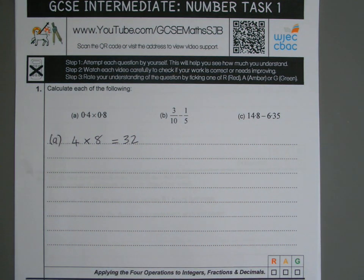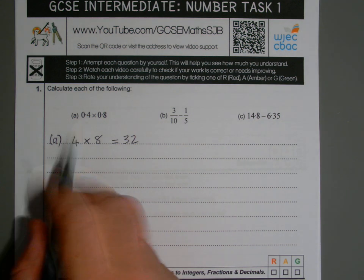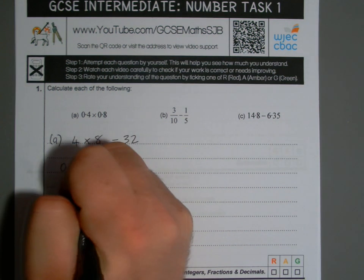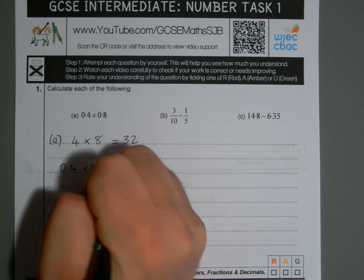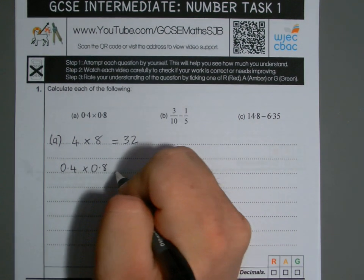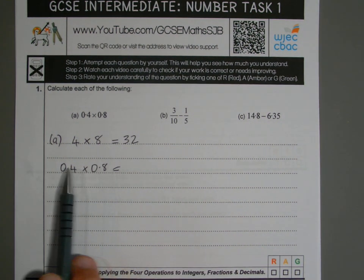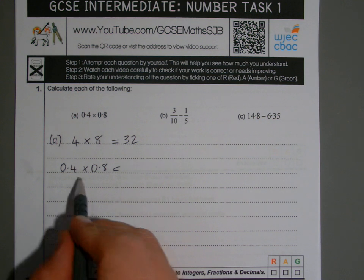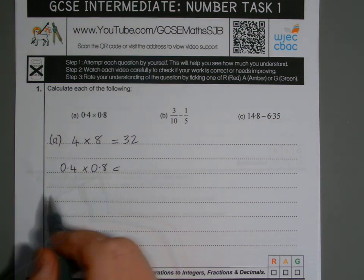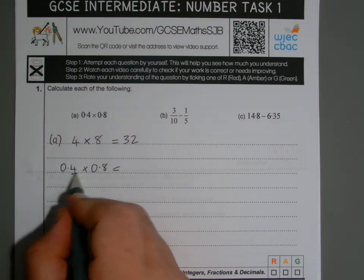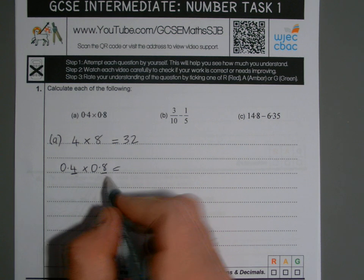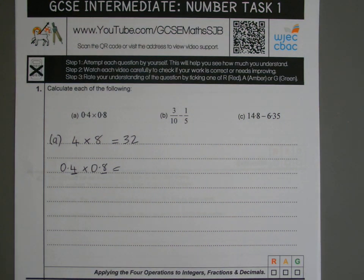But then looking at the actual question, we do have 0.4 here, and we do have 0.8 here. Now the quick way of using this answer to work out this is quite simply, look at how many decimal places there are actually in the question. So you've got one decimal place here, and another decimal place here.